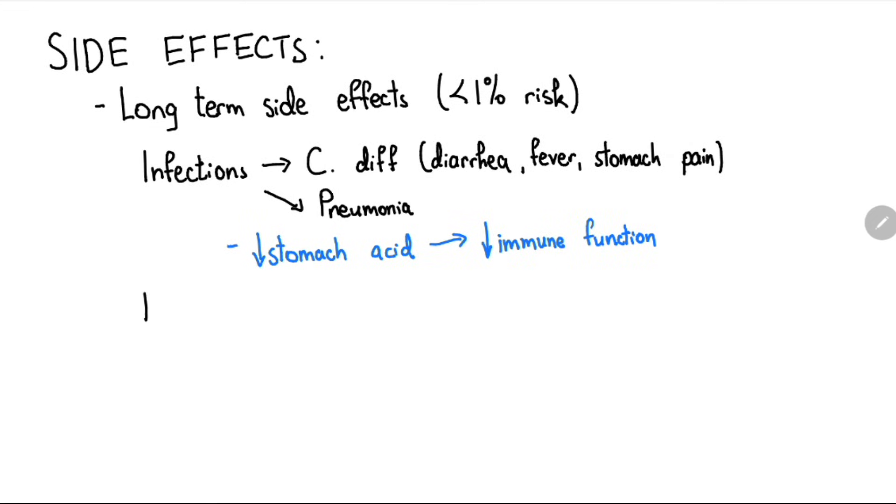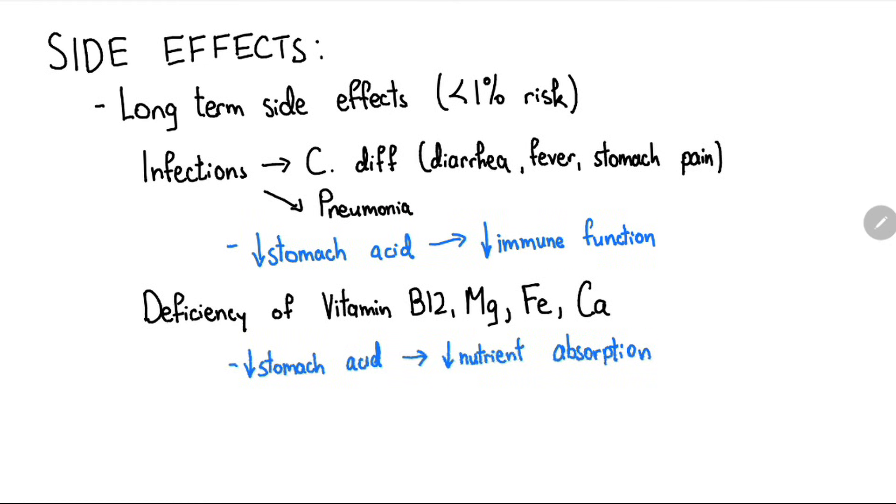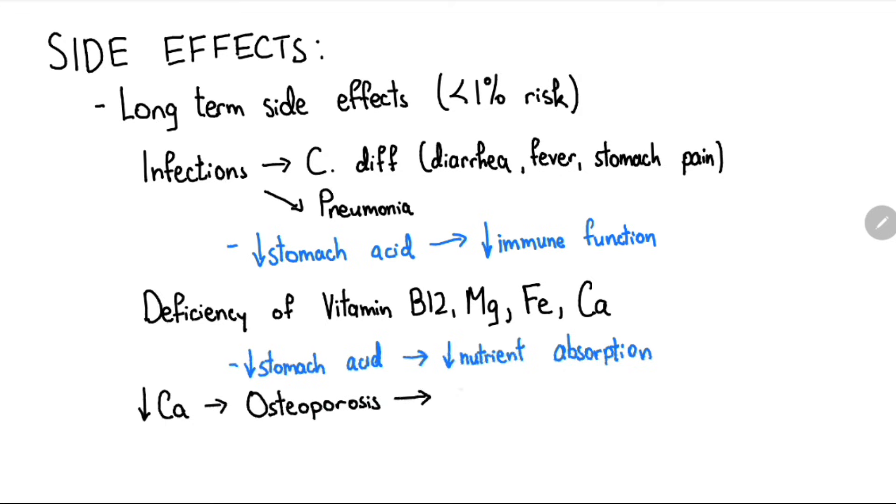There is also a risk of deficiency in vitamin B12, magnesium, iron, and calcium, as sufficient stomach acid is suspected to be necessary for absorption of these nutrients. Calcium deficiency can lead to complications such as osteoporosis and hip fractures. Chronic kidney disease is also a possible complication.